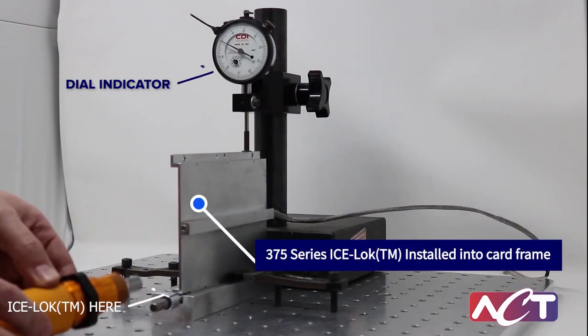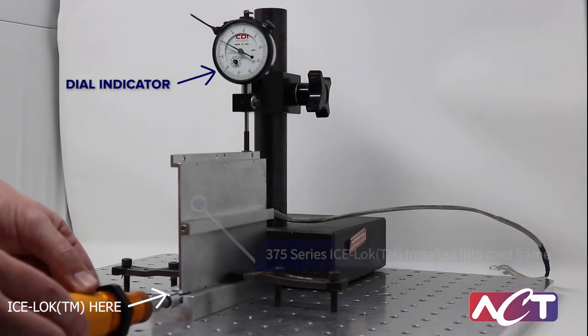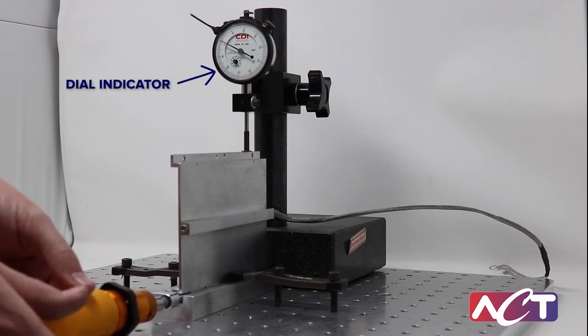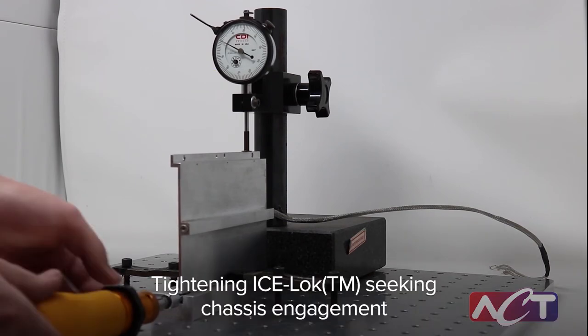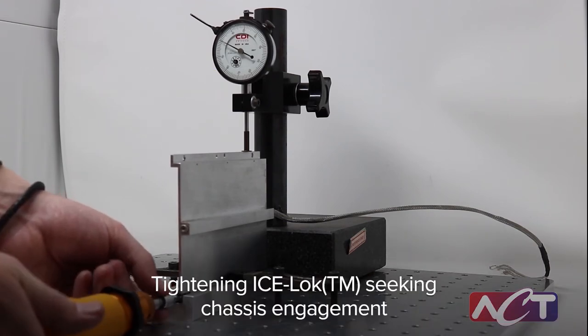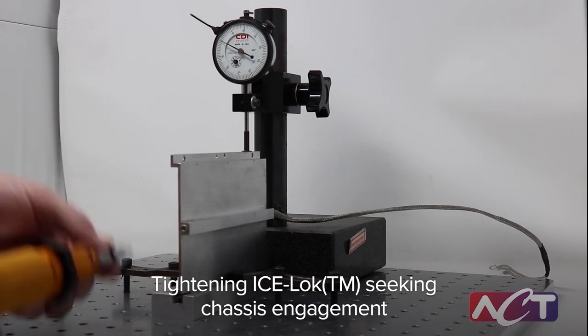We will take a 375 series ice lock and install it into a chassis slot with a conduction cart. We will only install the ice lock on one side of the card so that we can measure the other side of the card with a dial indicator.